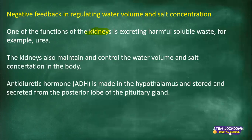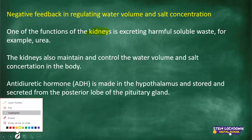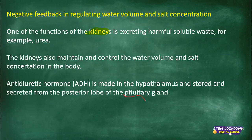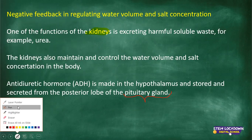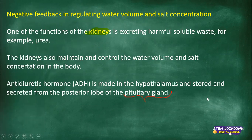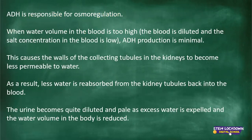Whilst we were studying the endocrine system, we discussed hormones, and one of the hormones we discussed was ADH, which is the antidiuretic hormone. It is made in the hypothalamus and stored and secreted from the posterior lobe of the pituitary gland. The other name for the pituitary gland is the master gland. It is involved in many functions of all the other glands, which is why it is called the master gland or the primary gland. ADH is made in the hypothalamus and secreted from the posterior lobe of the pituitary gland, and from there it regulates functions in the kidneys.